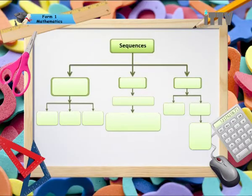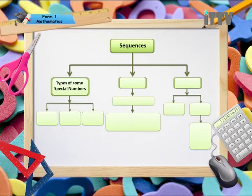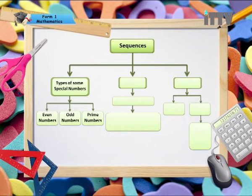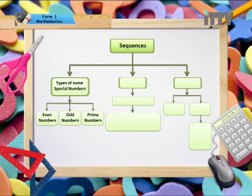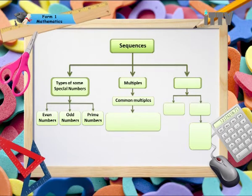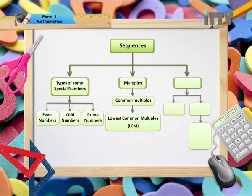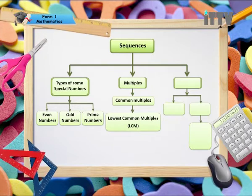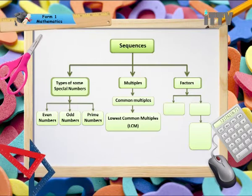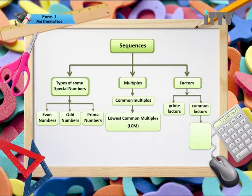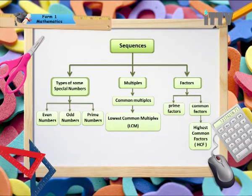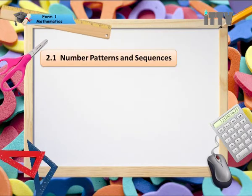In this chapter, dear students, we are going to see types of some special numbers such as Even Numbers, Odd Numbers and Prime Numbers. Later we will be checking out Multiples, and under Multiples we have Common Multiples and then Lowest Common Multiples, best known as LCM. Finally, we will be moving on into Factors — Prime Factors and Common Factors — and under Common Factors we will look at Highest Common Factor, better known as HCF.